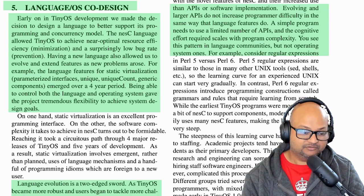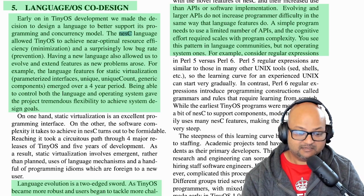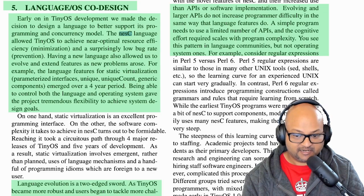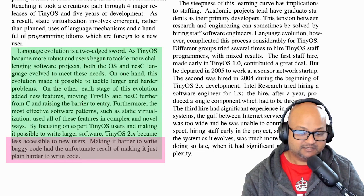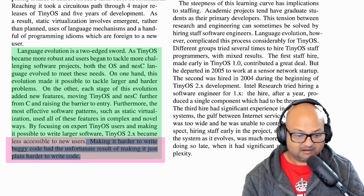This brings us to the first lesson they learned, which was striking the right balance between complexity and simplicity. TinyOS developed its own homegrown language called NesC, and this allowed them to really meet their design goals — to reduce resource usage and to write programs in a bug-free manner for sensor networks. However, there was a price paid for this. The language grew complex over time as it tried to meet these design goals. As the author puts it, making it harder to write buggy code had the unfortunate result of making it just plain harder to write code.